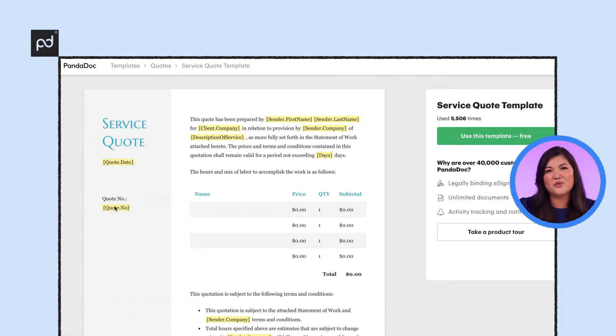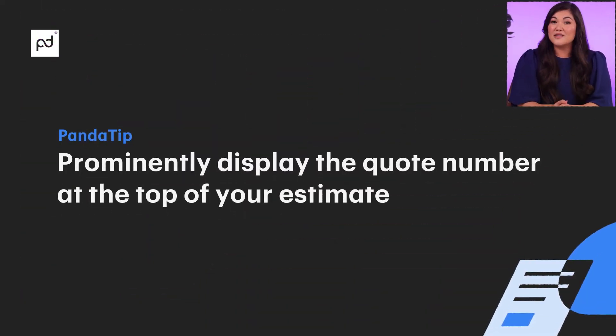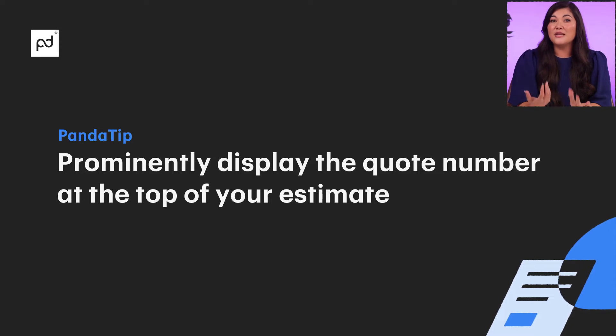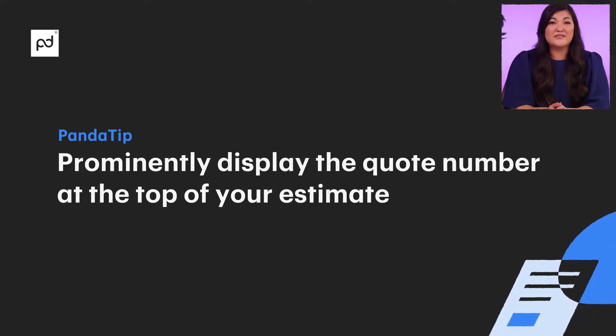Step two: entering a quote number. This step is optional, but it's definitely recommended for businesses that plan on sending a lot of quotes over time. The quote number is just a sequential set of digits or letters you assign to each quote you send to clients, similar to an invoice number. Quote numbers make it easy to keep track of and arrange quotes in your CRM or cloud drive. On this quote template, you can see the quote number just below the quote date. Our Panda tip is to prominently display the quote number at the top of your estimate for easy reference, and you can even have a client's initials added to this number if desired.